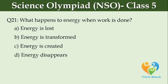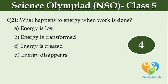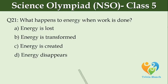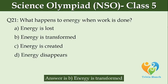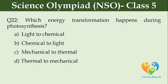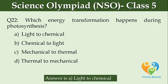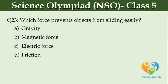What happens to energy when work is done? Option A: energy is lost. Option B: energy is transformed. Option C: energy is created. Which energy transformation happens during photosynthesis? Option A: light to chemical. Option B: chemical to light. Option C: mechanical to thermal. Option D: thermal to mechanical.